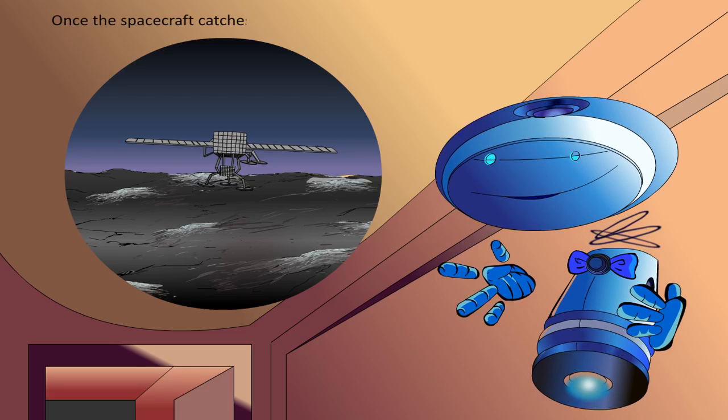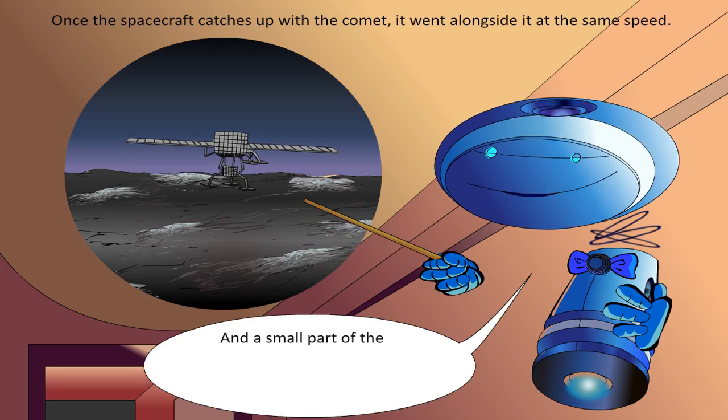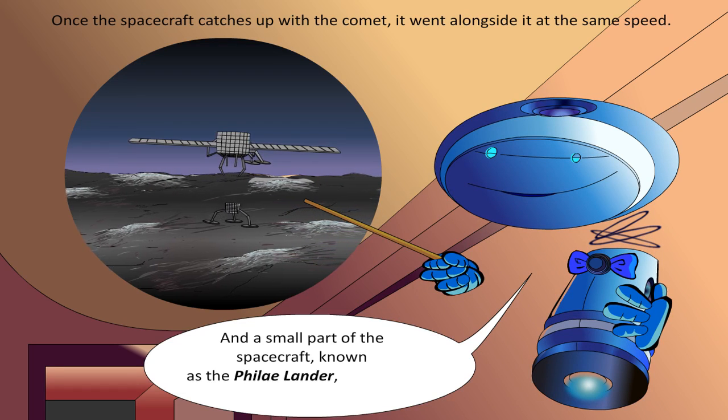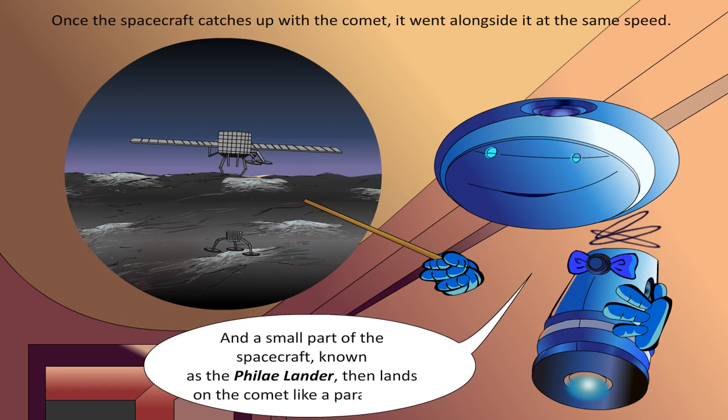Once the spacecraft catches up with the comet, it will go alongside it at the same speed. And a small part of the spacecraft known as the Philae Lander then lands on the comet like a parachute.